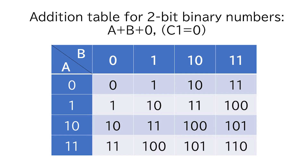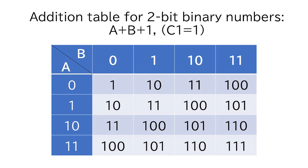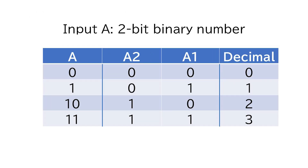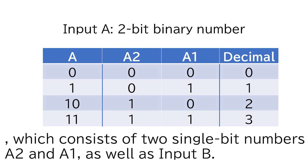This is the addition table for 2-bit binary numbers A plus B plus 0 when C1 equals 0. This is the addition table for 2-bit binary numbers A plus B plus 1 when C1 equals 1. Input A is a 2-bit binary number, which consists of two single-bit numbers A2 and A1, as well as input B.